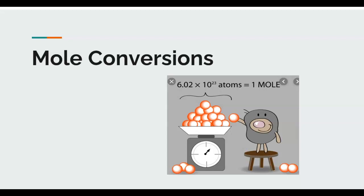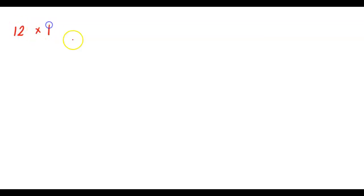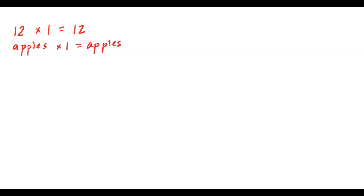I want to take a quick sidestep and discuss some regular math concepts. In terms of the number one — everyone agrees that mathematically anything times one is one and the same. So if I have 12 times one, the answer is 12.